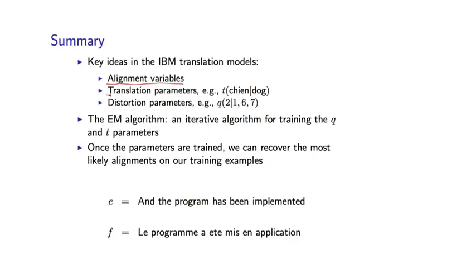And secondly, to make use of translation parameters. For example, the probability that dog is translated to the word shea, and also distortion parameters. For example, the probability that position 1 in French is aligned to position 2 in English.